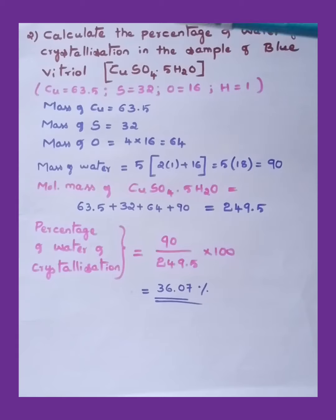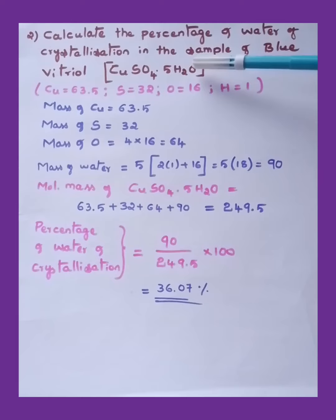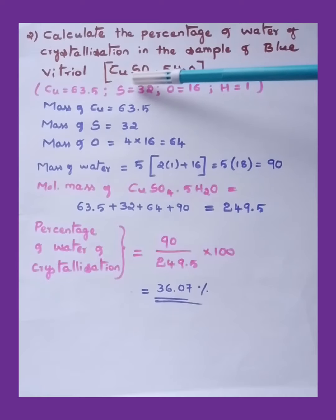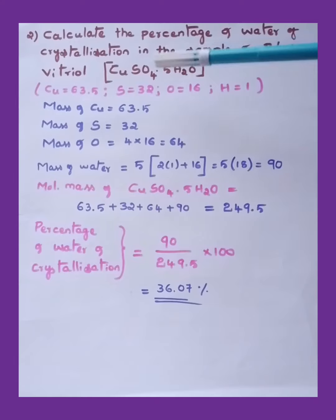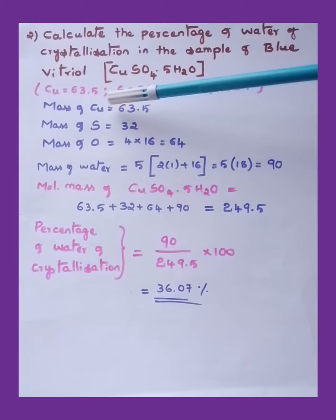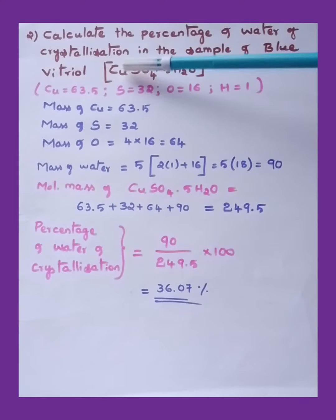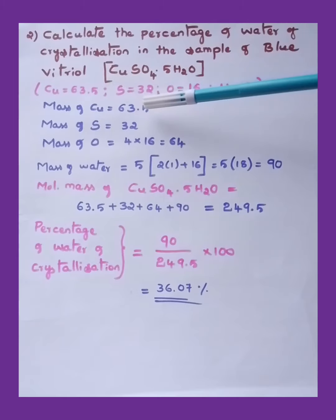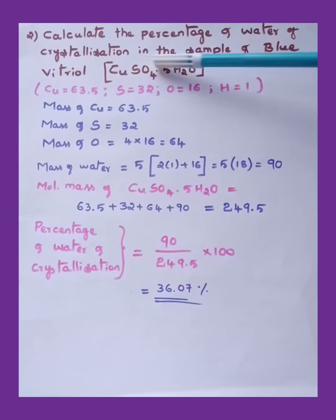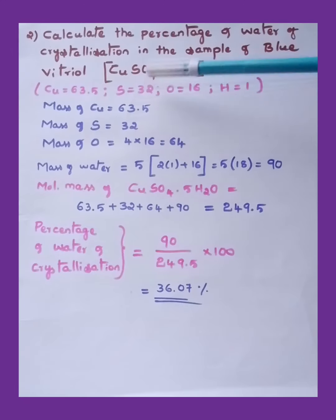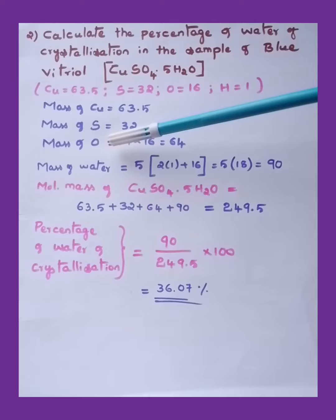Atomic weights given: Cu = 63.5, S = 32, O = 16, H = 1. Mass of copper: present once, so 1 × 63.5 = 63.5. Mass of sulfur: present once, so 1 × 32 = 32.